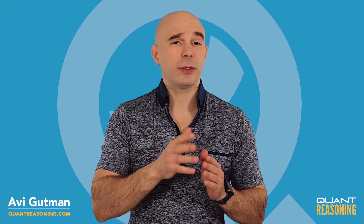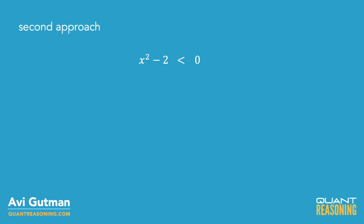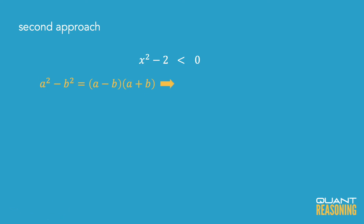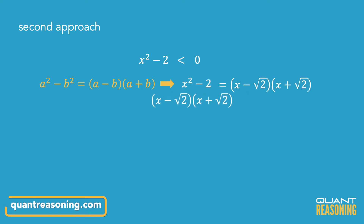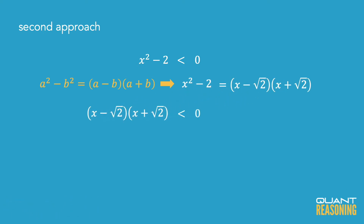For the second approach, I'm going to use the difference of squares: a squared minus b squared equals a minus b times a plus b. In this case we have x squared minus 2. If we treat 2 as a number squared, that number would be square root of 2. Applying the difference of squares, we get x minus square root of 2 times x plus square root of 2, and that whole thing is less than 0.